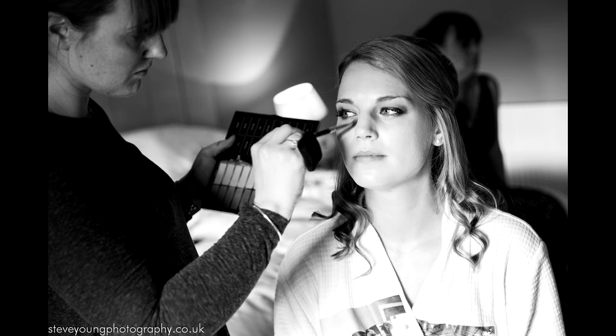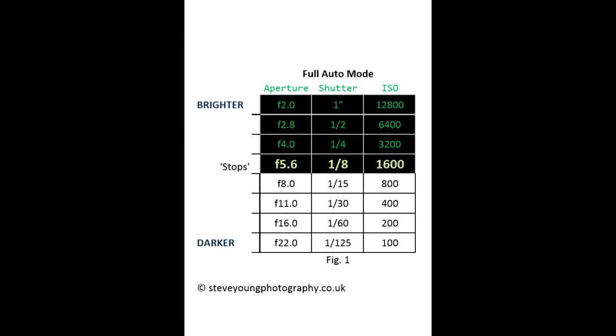Now, if I were to put the camera into fully automatic mode, the camera's only going to be thinking about getting the brightness of the image correct. It's not going to be looking at the scene and saying this is a picture of a bride — it's only the bride that we want in focus. So the camera's not necessarily going to know that we're happy to have a blurry background. In this relatively low-light indoor situation, fully automatic mode may well give us settings like these in figure one: an aperture of f5.6, a shutter speed of an eighth of a second, and an ISO of 1600.